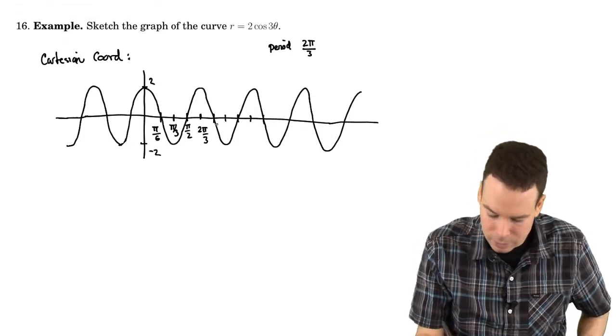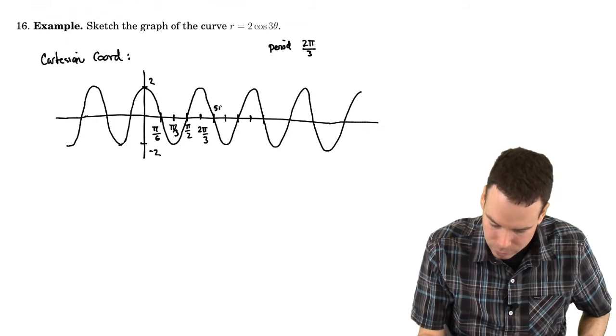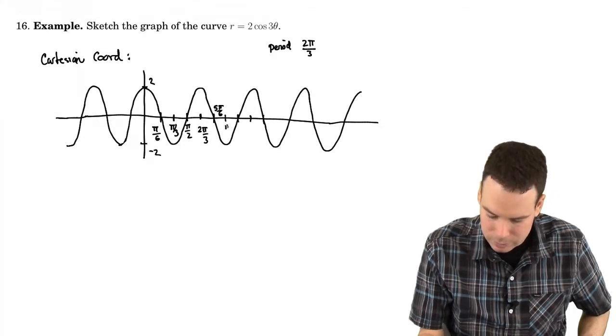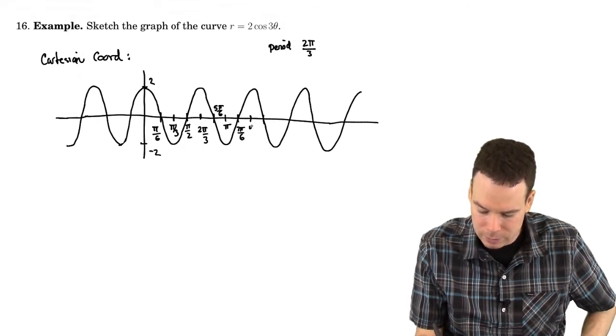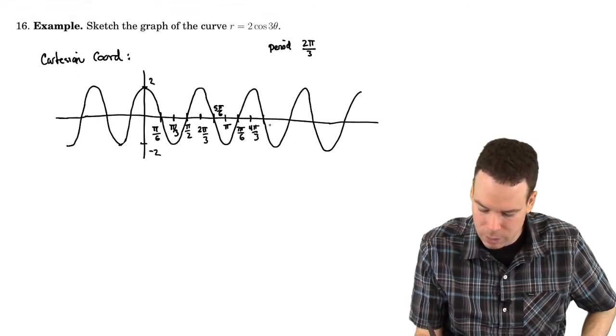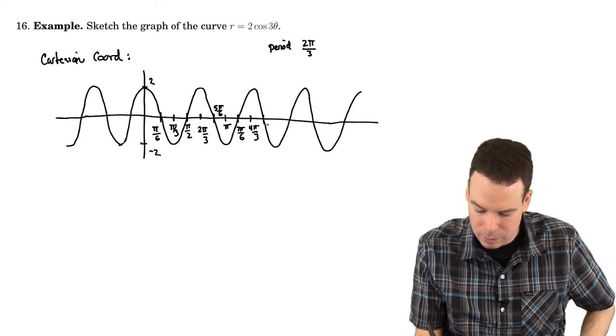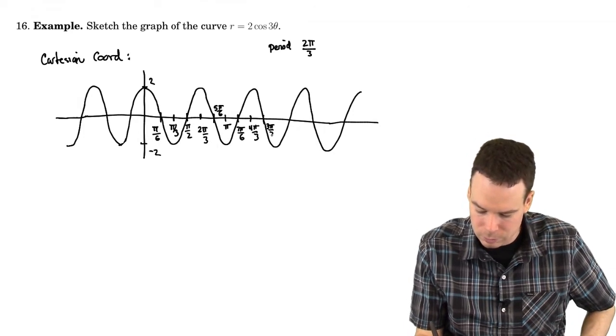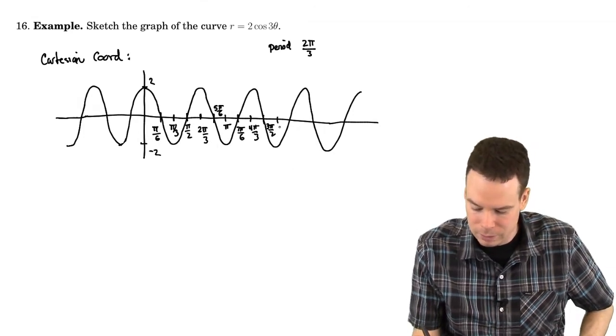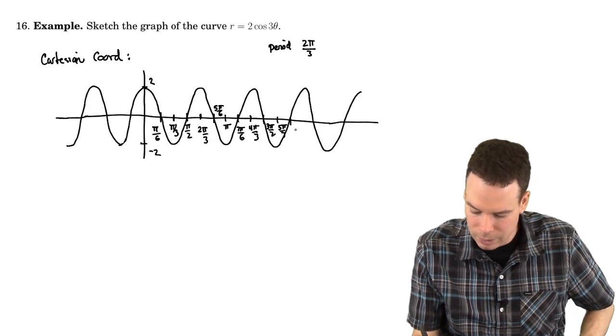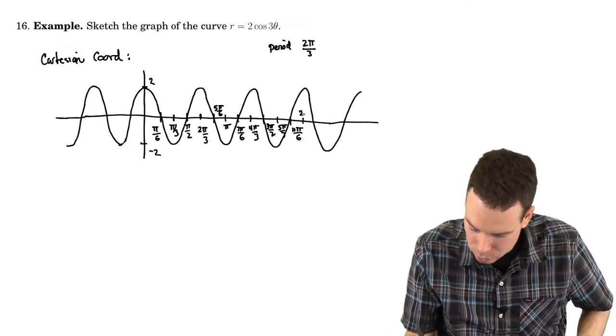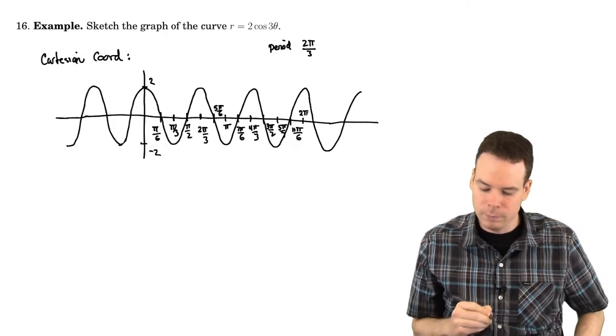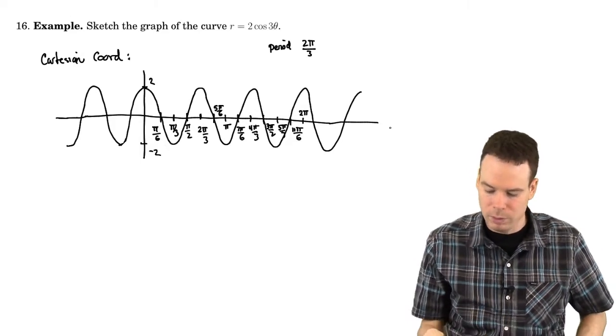So this was 4π by 6, and that's now 5π by 6, 6π by 6, 7π by 6, 8π by 6 is 4π by 3, 9π by 6 is 3π by 2, 10π by 6 is 5π by 3, 11π by 6, 12π by 6 is 2π. And we can keep going, but I'll stop there.